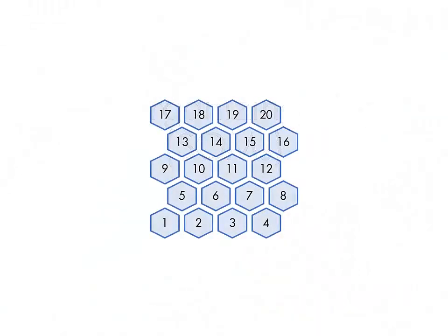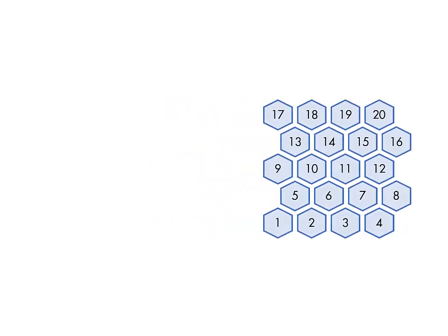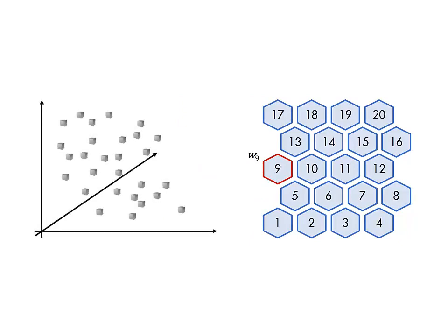A self-organizing map is a collection of neurons in a regular one- or two-dimensional array. Each neuron has an associated weight vector, which corresponds to a point in the original n-dimensional feature space.